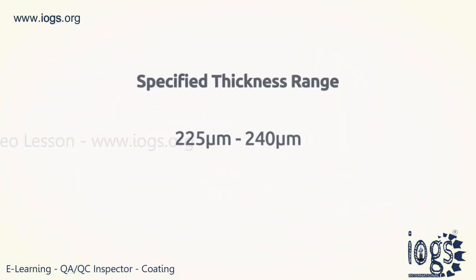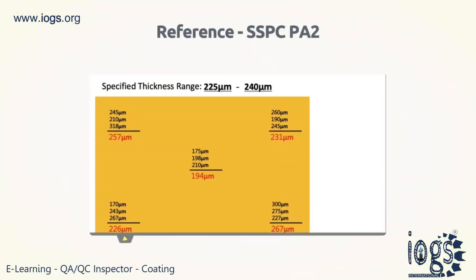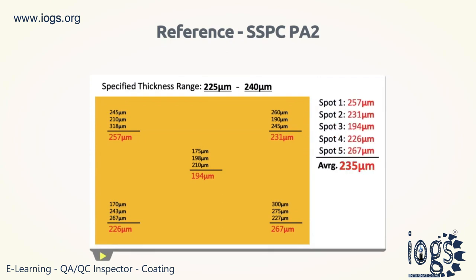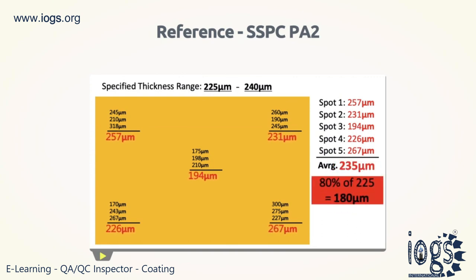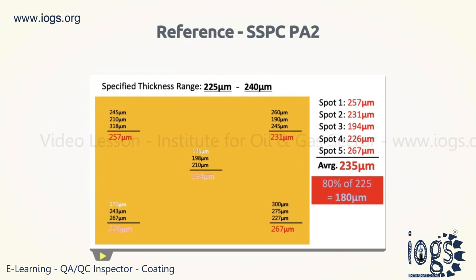Each chosen spot must consist of three gauge readings that do not exceed a 1.5-inch diameter circle. For instance, a coating specification may demand the inspector to confirm the conformance of a coating thickness between 225 and 240 micrometers. In such an instance, the five spot measurements of a 10 square meter area must have an average that is not less than the specified minimum thickness. Likewise, every spot measurement in all the 10 square meter area must not be less than 80% of the specified minimum thickness. A gauge reading of a spot that underruns by a significant amount will be accepted; however, the average of the three gauge readings of the same spot must meet or exceed 80% of the specified minimum thickness.